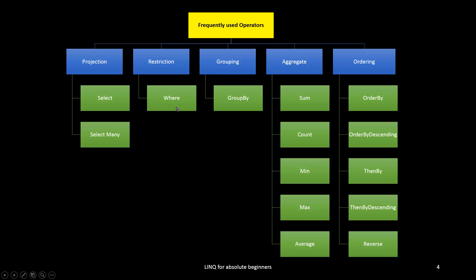Restriction is nothing but conditions. For a condition, we have to use the WHERE keyword. Then grouping — group by columns. Group by multiple columns is also possible. Aggregation is nothing but aggregation functions in mathematics like sum, count, minimum, maximum, and average. Ordering is nothing but sorting — we can sort using ascending or descending.